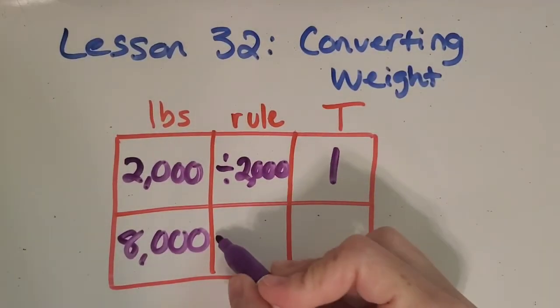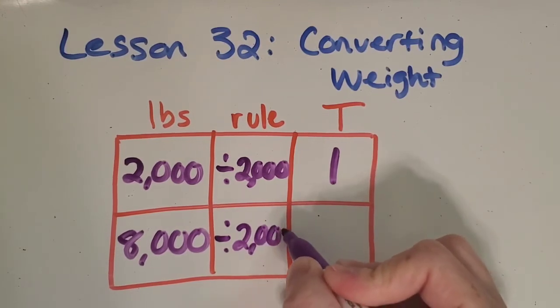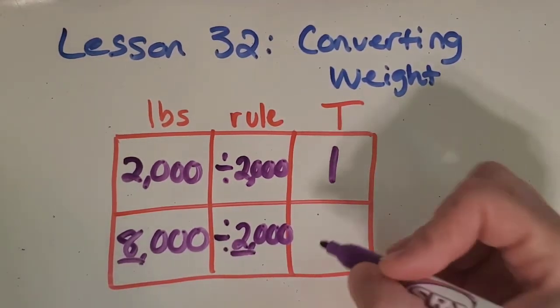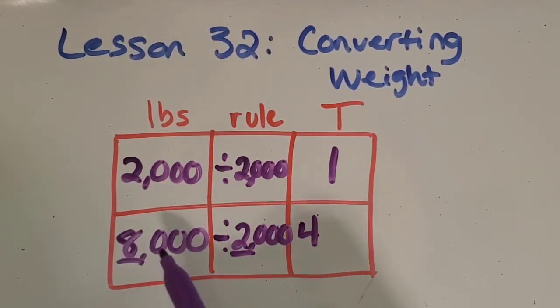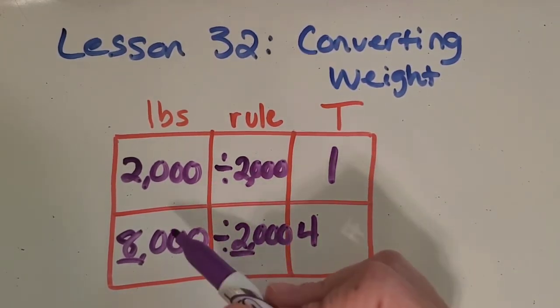Let's check your work. So it's divided by 2,000 and there's a couple ways you could do this. You could be thinking about the 8 divided by 2 is 4 and then these zeros cancel themselves out because there's 3 over here and there's 3 over here. 3 in the dividend, 3 in the divisor so it cancels those out.